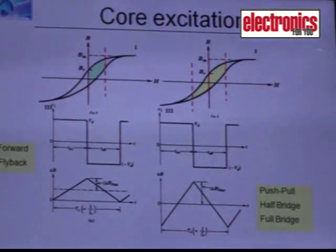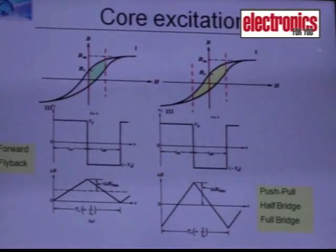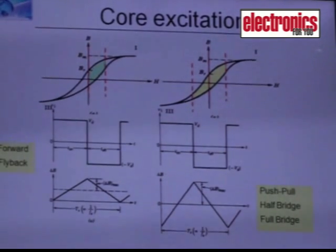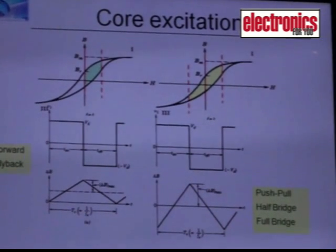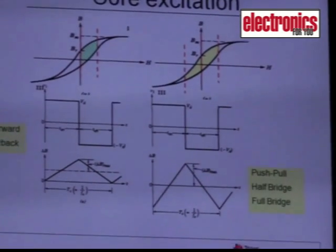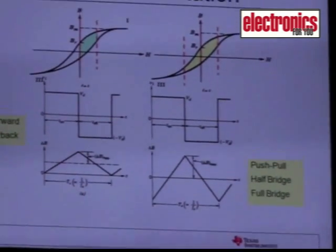But asymmetrical converters have advantages because they have low cost, lower number of switches, but they also need a reset mechanism like a reset winding or a clamp circuit to reset the magnetic flux.